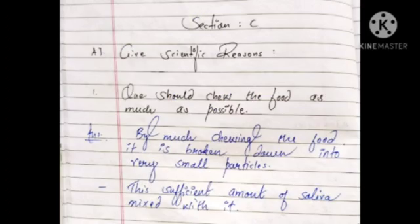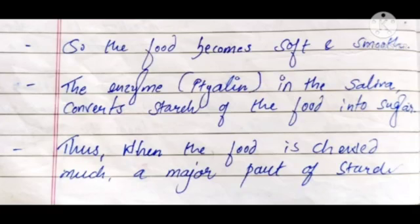Now moving towards Chapter number 2, Section C: Give scientific reasons. The first one is — one should chew food as much as possible. The answer is: by chewing the food thoroughly, it is broken down into very small particles. A sufficient amount of saliva mixes with it, so the food becomes soft and smooth.